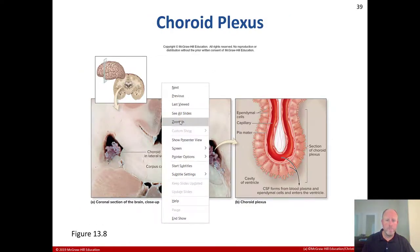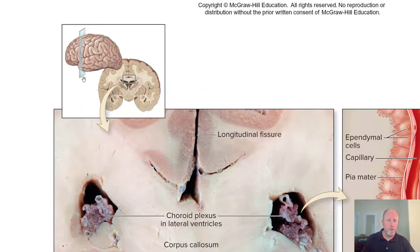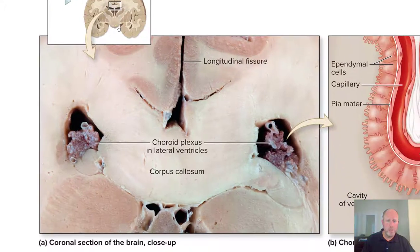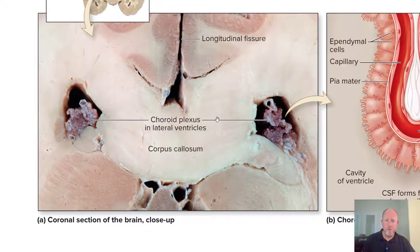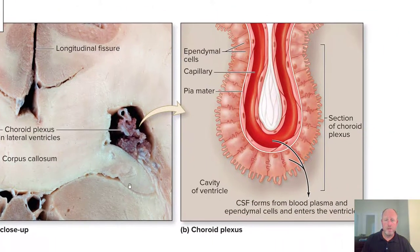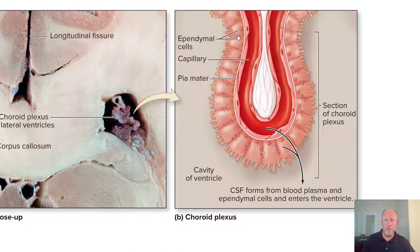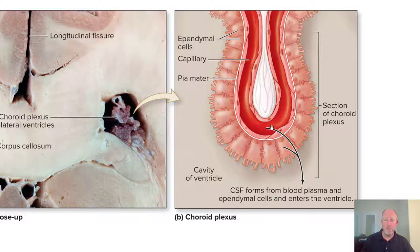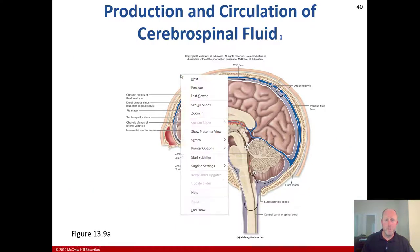Here we can see the choroid plexus. Looking at a coronal section, we have the longitudinal fissure centrally, the choroid plexus on either side within the lateral ventricles, and the corpus callosum. The close-up shows ependymal cells and capillaries within the choroid plexus. The pia mater surrounds the outside, and the cerebrospinal fluid — formed from blood plasma modified by ependymal cells — enters the ventricle via the capillaries.